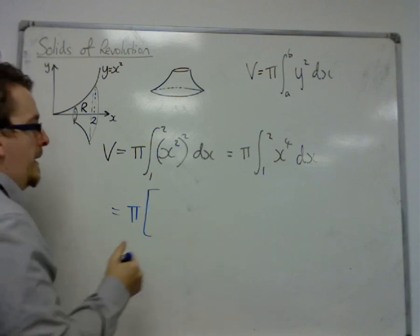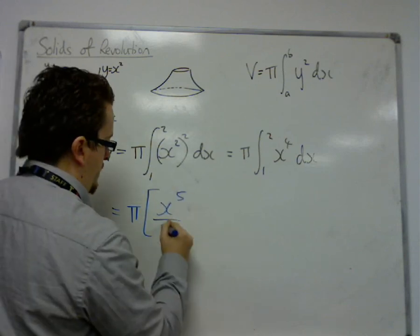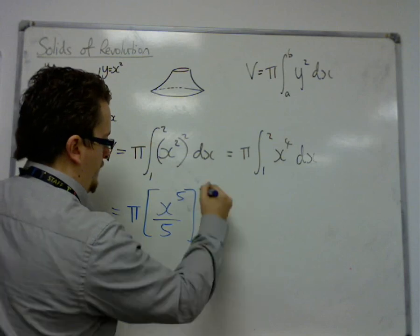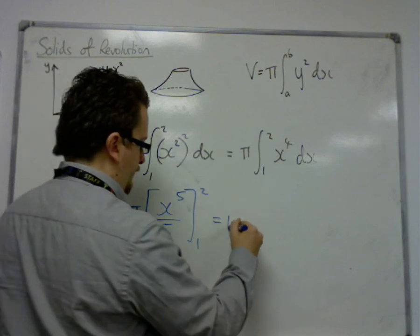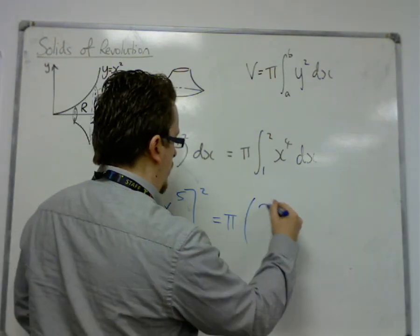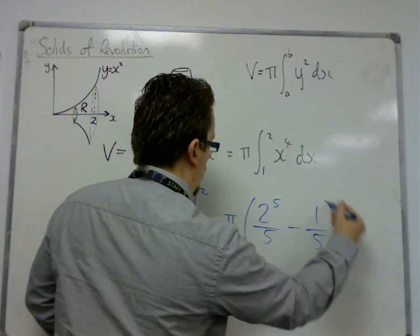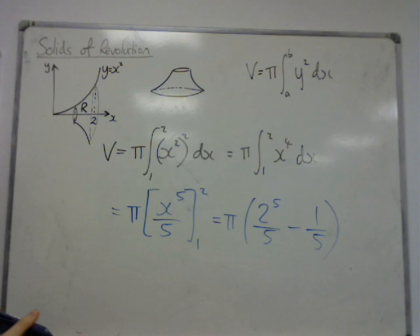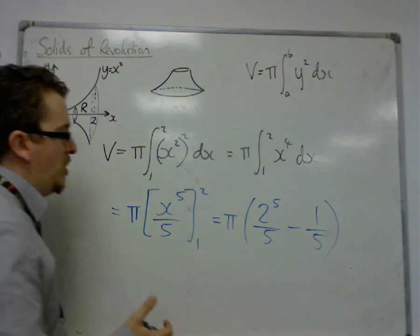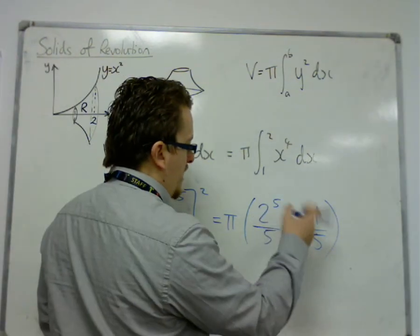So, the pi is on the outside. We can add 1 to the power and divide by the new power, evaluate it between 1 and 2. So, you get π lots of 2⁵ over 5, take away 1/5. So, 2⁵ is 32, take away 1 is 31.